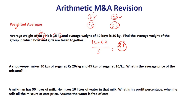If both groups were equal in number, it would simply be a simple average. So if the number of boys and girls are equal, the average would be 15 plus 30 divided by 2, which is 45 by 2 — that's 22.5. That's point number one.